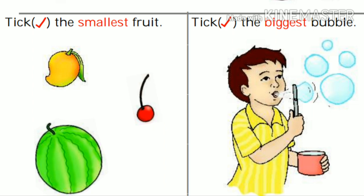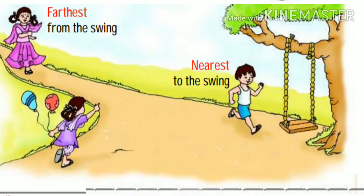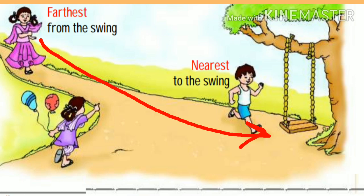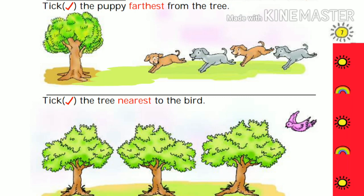In the next question, you have to find the biggest bubble. Yes, this is the biggest bubble. In this picture you can see a swing and there are three children. As you can see, this boy is nearest to the swing and this girl is farthest from the swing. In this picture there are four puppies, and you have to find the farthest puppy from this tree. Yes, the last one is farthest from the tree. In the next question, take the tree nearest to the bird. Yes, this tree is nearest to the bird.